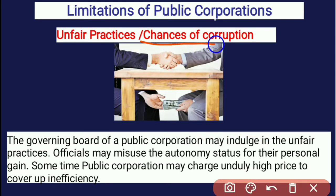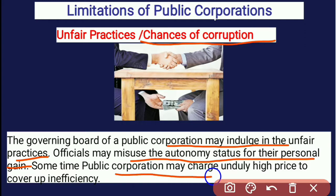Next is unfair practices or chances of corruption. The governing body of a public corporation may indulge in unfair practices. They may misuse their autonomous status for personal gain. The board of directors who have been given autonomy may misuse it for personal gain. Sometimes public corporations may charge unduly high prices to cover inefficiencies. That is why there are chances of unfair practices, making this one of the limitations.